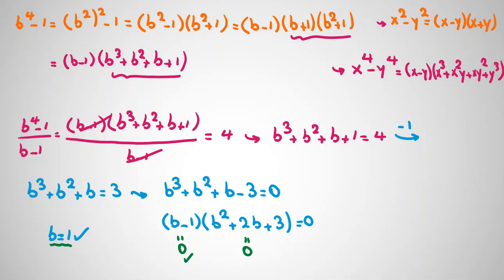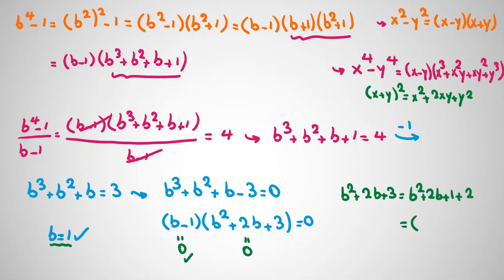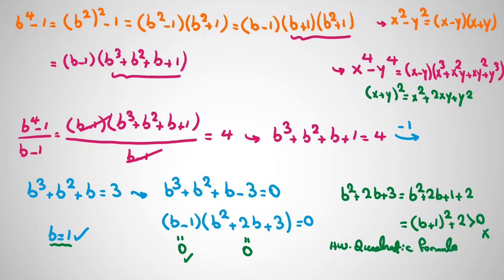We can prove b² + 2b + 3 = 0 is impossible for real numbers. Using the identity (x+y)² = x² + 2xy + y², we rewrite: b² + 2b + 3 = (b² + 2b + 1) + 2 = (b+1)² + 2. Since (b+1)² ≥ 0, this expression is always at least 2, so it can never equal zero. Alternatively, you can use the quadratic formula and show the discriminant is negative. Therefore the only real solution is b = 1.